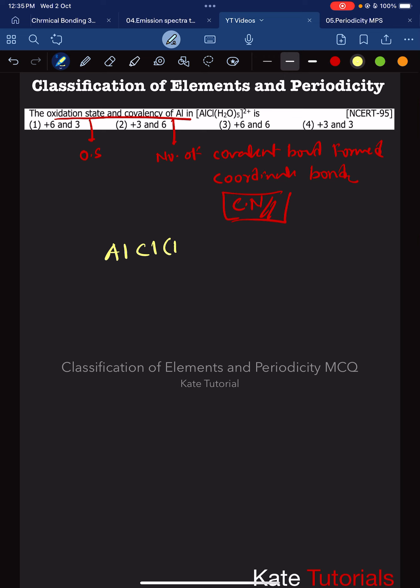To find the oxidation state, let's set aluminum as x. Chlorine's oxidation state is -1, and water is neutral, so 5 times 0 for the water molecules. The overall charge of the complex is 2+.